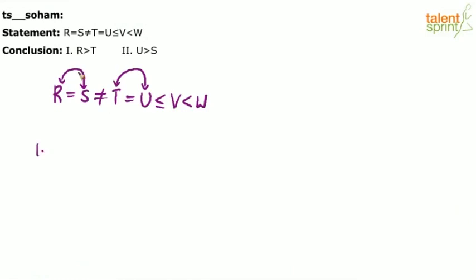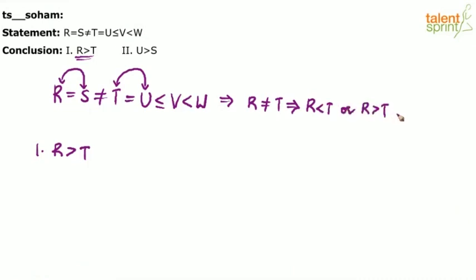The first conclusion says R is greater than T. From the statement, R is not equal to T. But if R is not equal to T, that means R is either less than T or greater than T — there are only three types of comparisons possible: equal, greater, or less. So R greater than T is possible, but not definite. Therefore, the first conclusion is false.